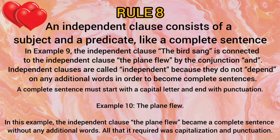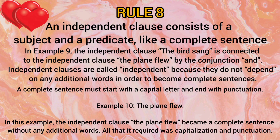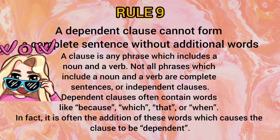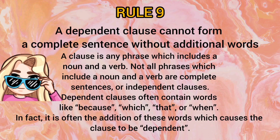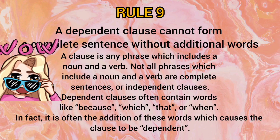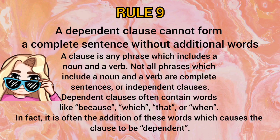Rule number 8: An independent clause consists of a subject and a predicate, like a complete sentence. It must start with a capital letter and end with punctuation, like 'The plane flew.' Rule number 9: A dependent clause cannot form a complete sentence without additional words. Dependent clauses must contain words like 'because,' 'which,' 'that,' or 'when' — it is often the addition of these words which causes the clause to be dependent.